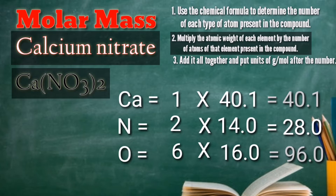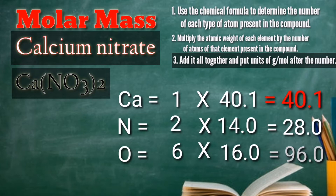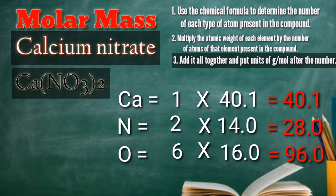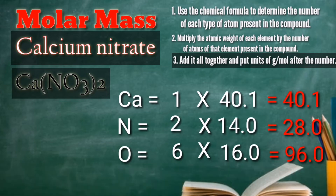So after that, we can apply rule number three: add it all together and put units of grams per mole after the number. So, 40.1 plus 28.0 plus 96.0 is equal to 164.1 grams per mole of calcium nitrate.